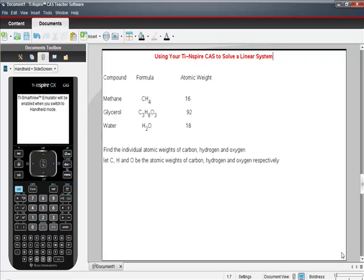I took this problem out of a chemistry book. It gave me a table of compounds and formulas and their atomic weights. The compound methane has a formula of CH4 with an atomic weight of 16, and glycerol has a formula of C3H8O3 with an atomic weight of 92. And water is H2O with an atomic weight of 18.